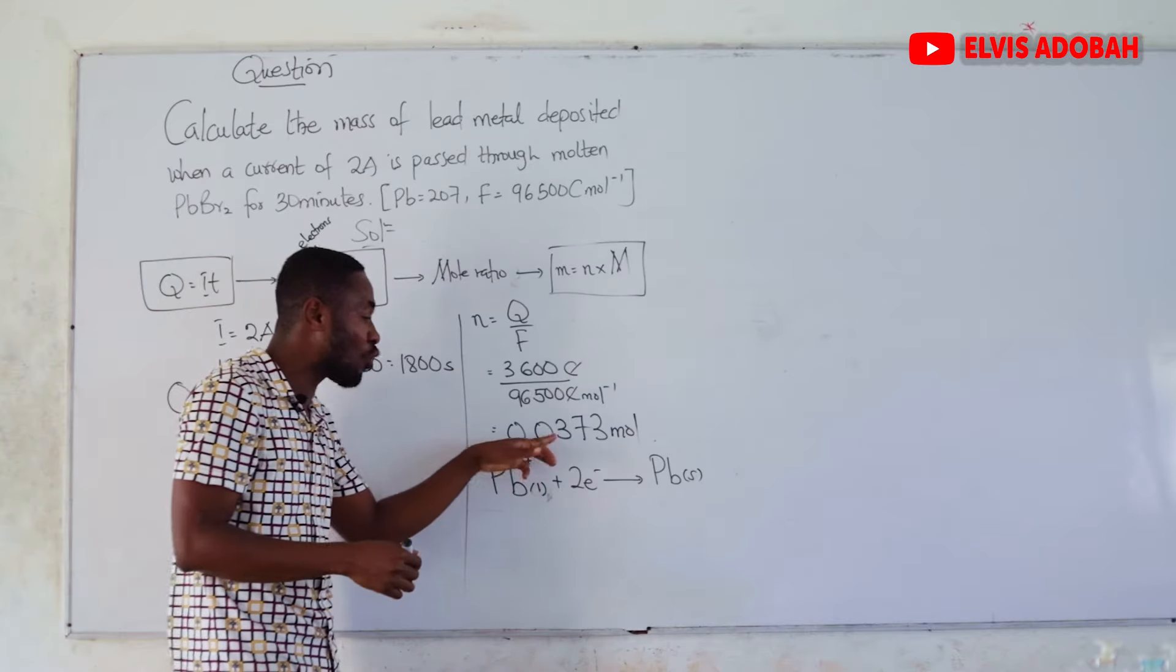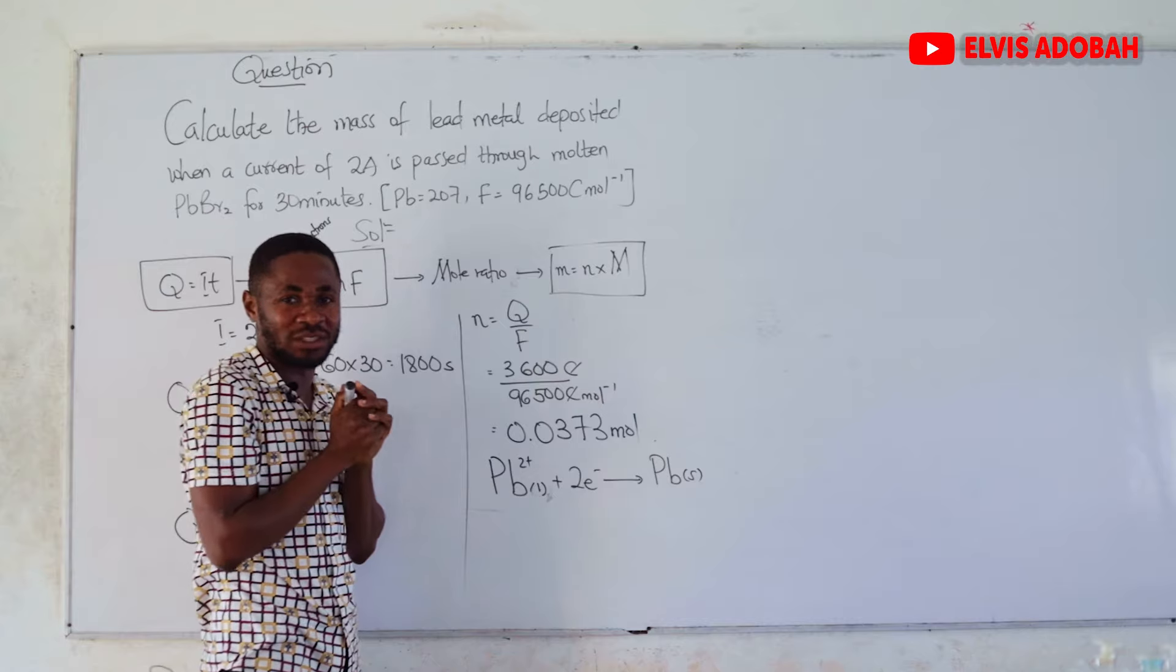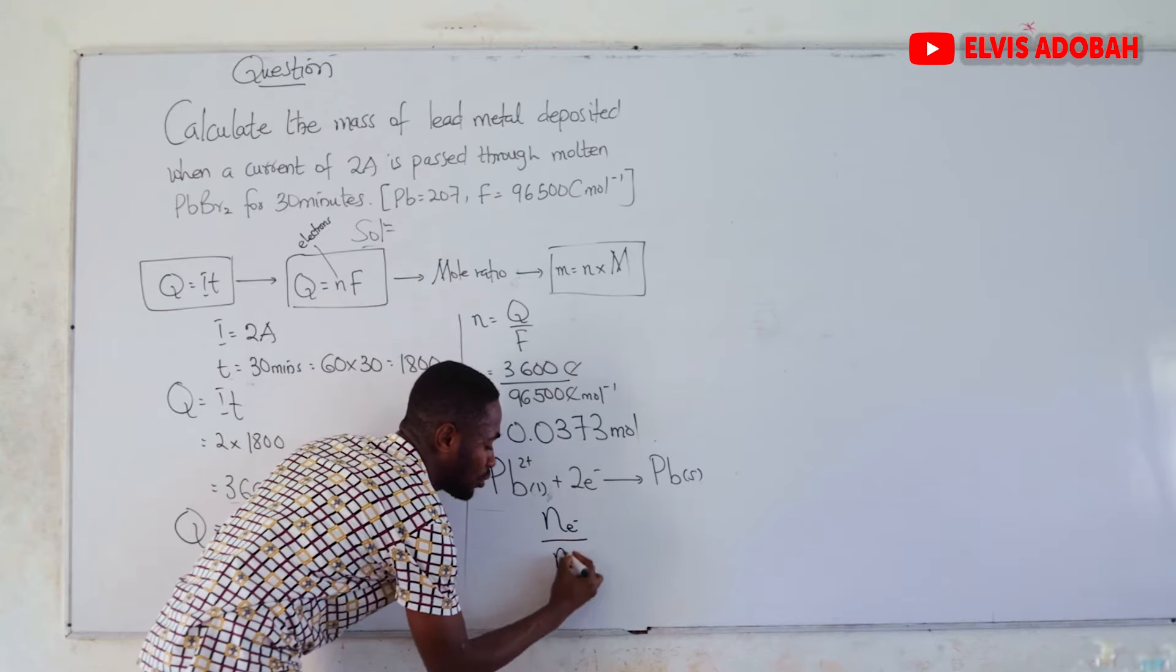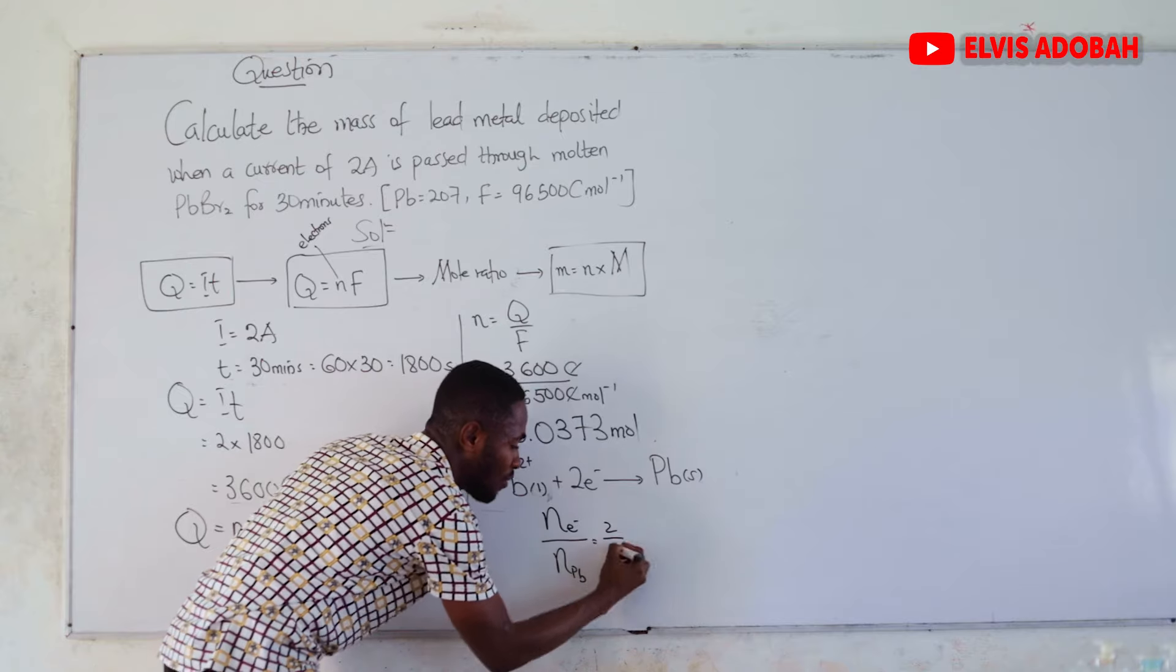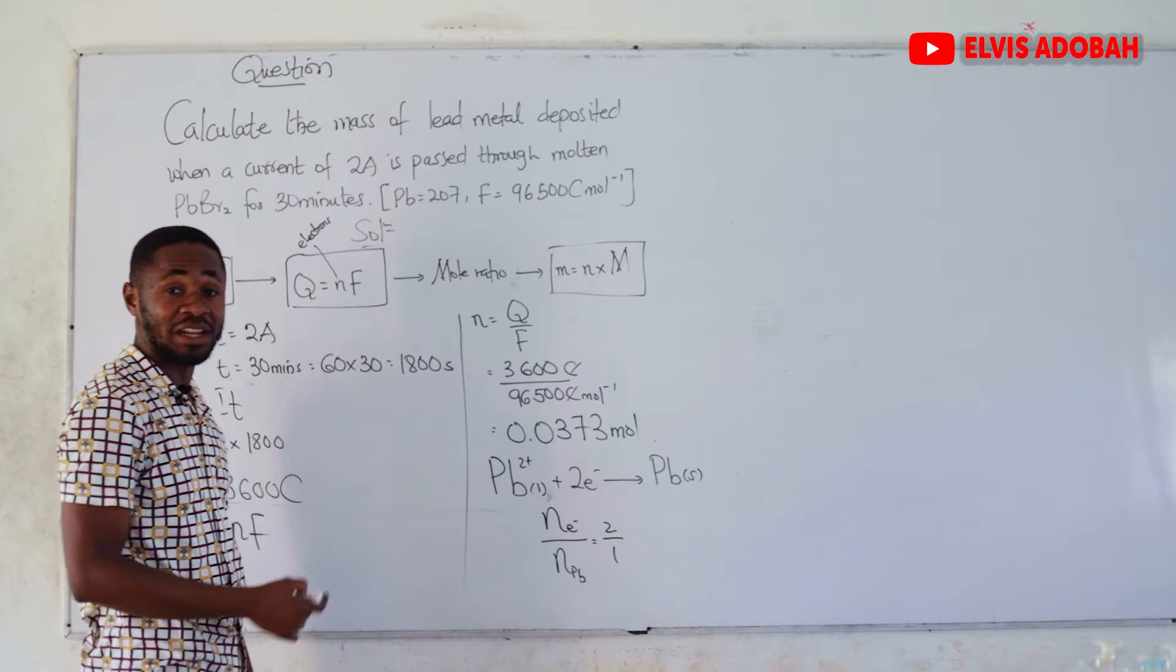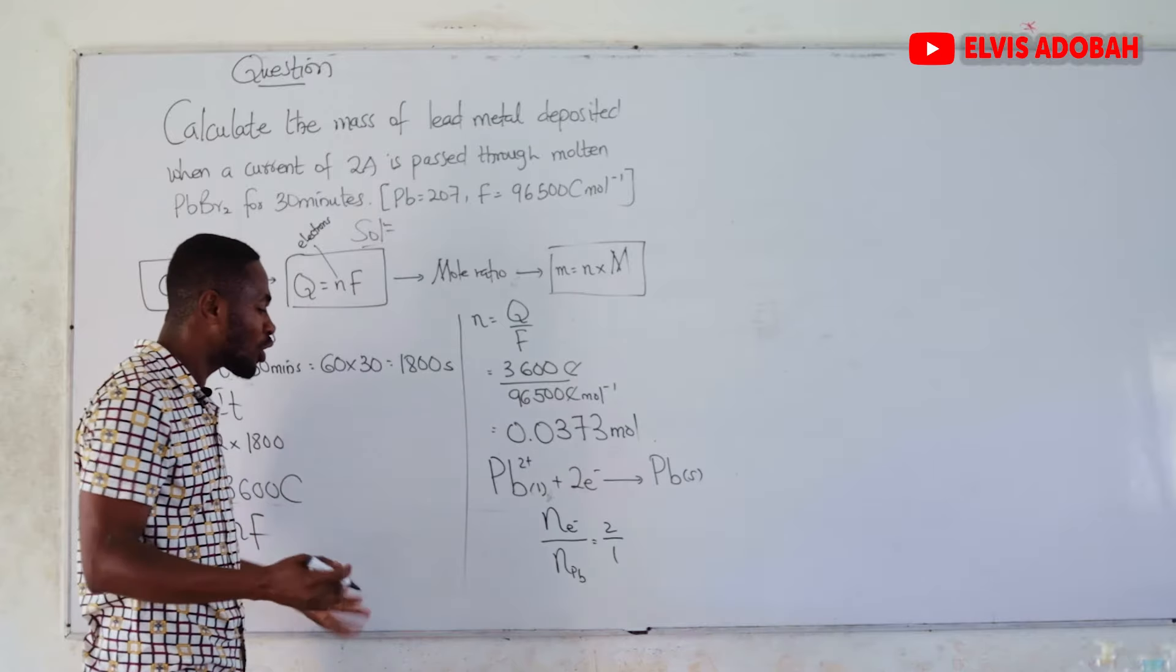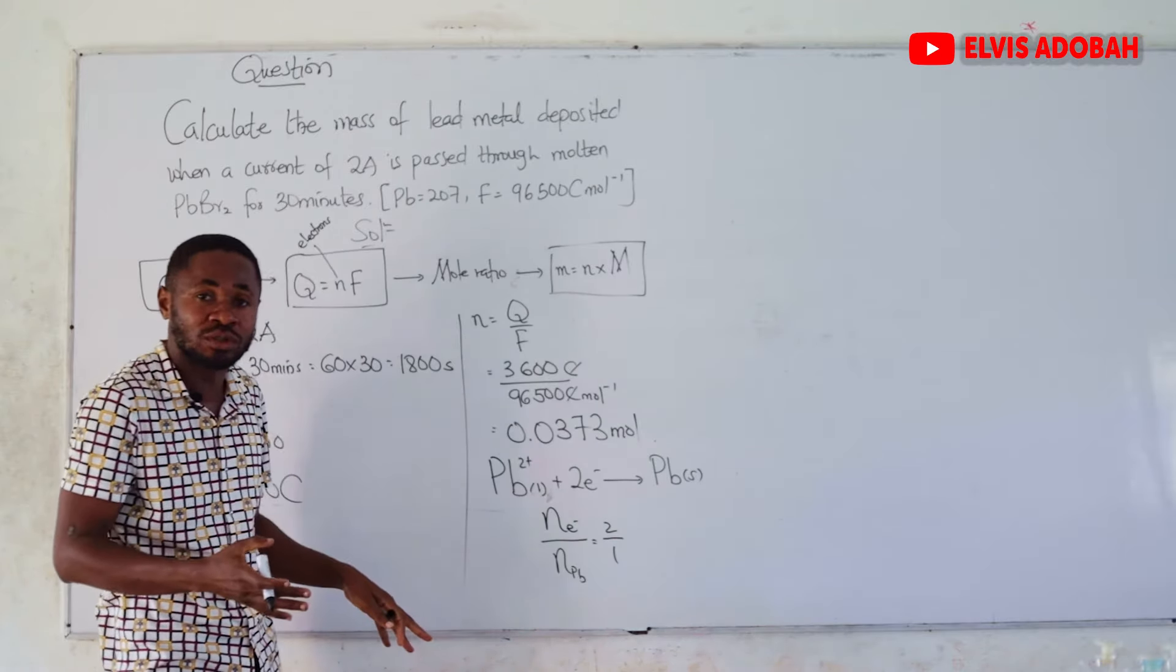The coefficients are also called the moles, the moles of Pb formed to the moles of electrons, which we have already calculated over here, using the quantity of charge and the Paradise constant. Amount of electrons to amount of Pb is 2 over 1. That is the mole ratio.